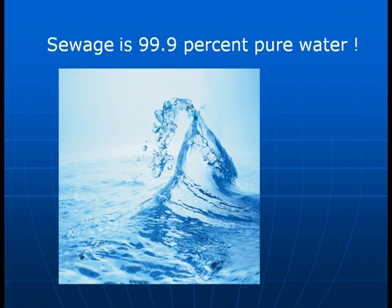What is sewage made of? Sewage is actually 99.9% pure water. But it's this 0.1% of the material that is really a cause of concern for a variety of reasons.